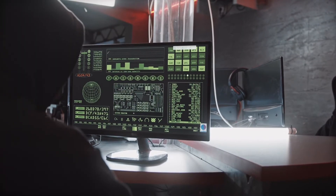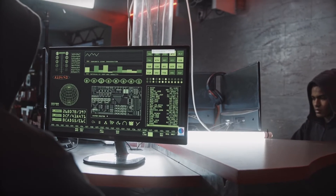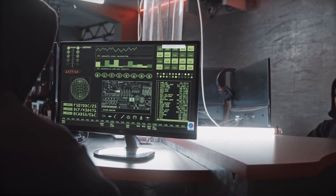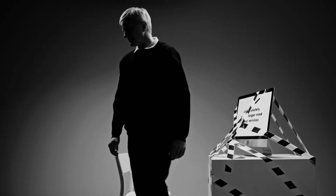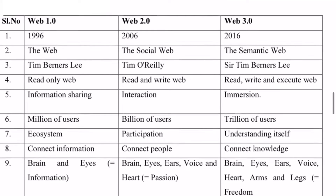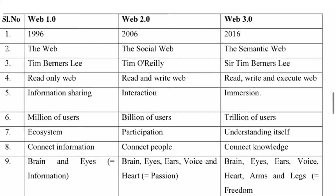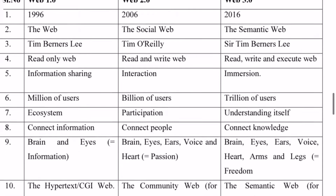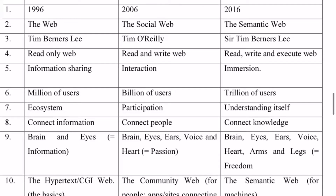I'd like to go back to Web 1.0 so we can talk more about this and give you the full overview. Web 1.0 refers to the first stage of the worldwide web evolution. Back then there were only few content creators. In 1996 we only had the web, and it was more like a read-only web where people could only read through web pages and share information, with about millions of users.